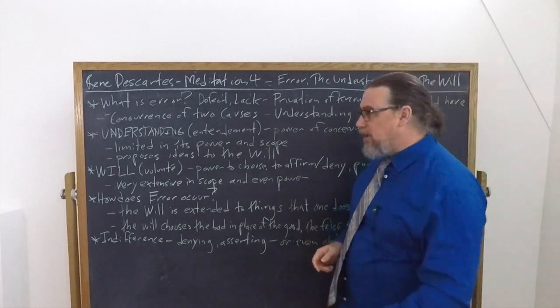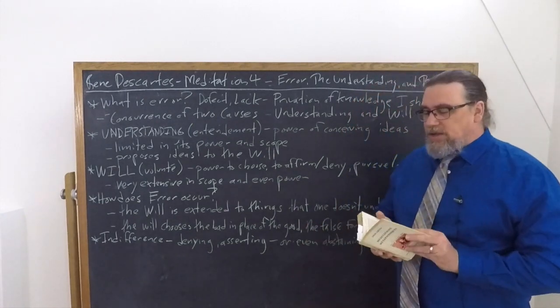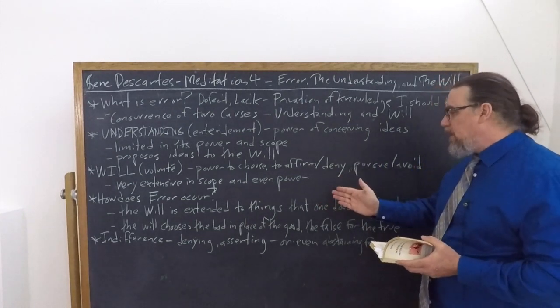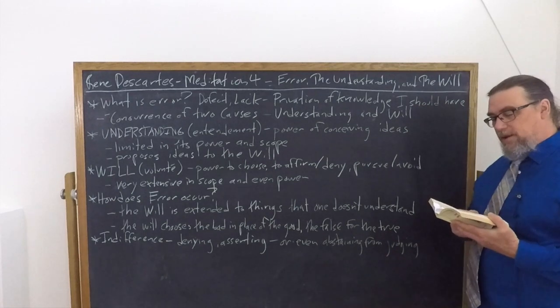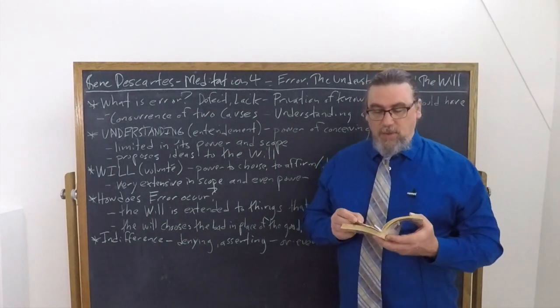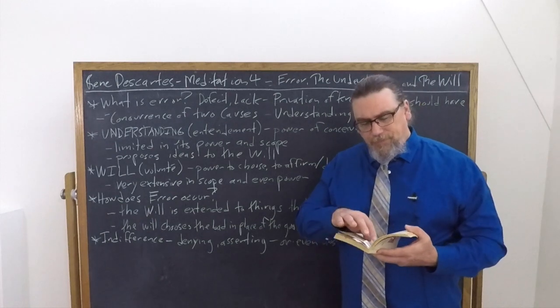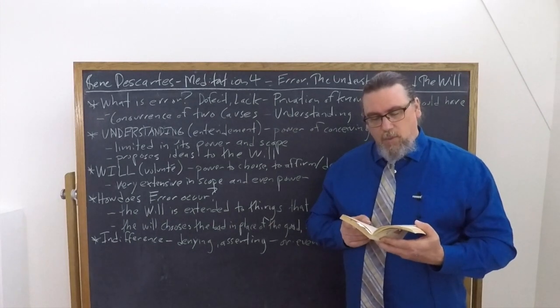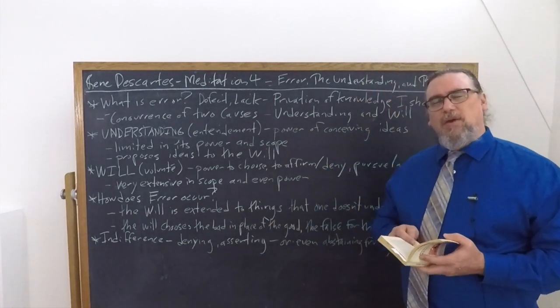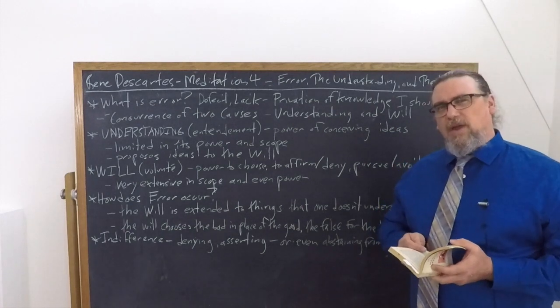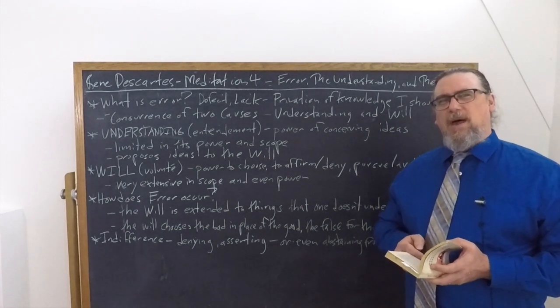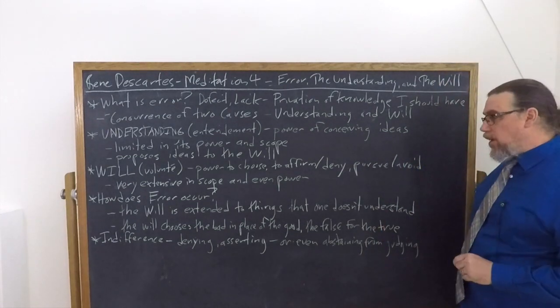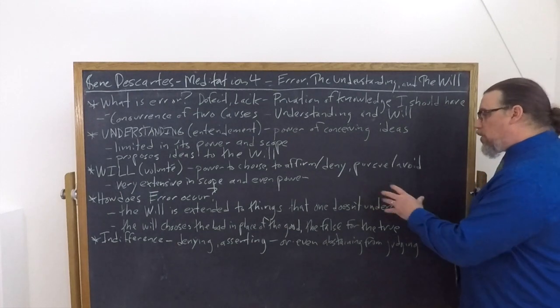So Descartes tells us that the will extends itself to things that we don't actually understand, beyond what it is that we do understand. And that's what gets us into trouble. We deny things, we affirm things, we pursue things, we avoid things without having an adequate grasp on the ideas, according to Descartes, that we're working with. So this is a big problem.